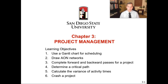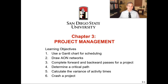Our learning objectives for Chapter 3 are to learn how to use a Gantt chart for scheduling. We will draw an AON — activity on node — network diagram. We're going to complete a forward pass and a backward pass, determine the critical path of a project, calculate the variance of activity times, and last but not least, we will crash a project. These terms will all make sense by the end of this chapter.